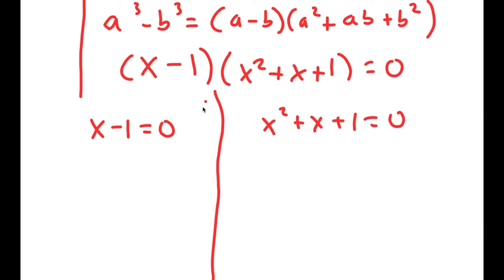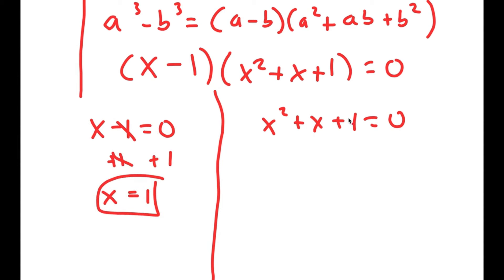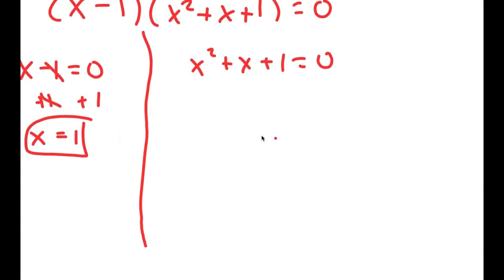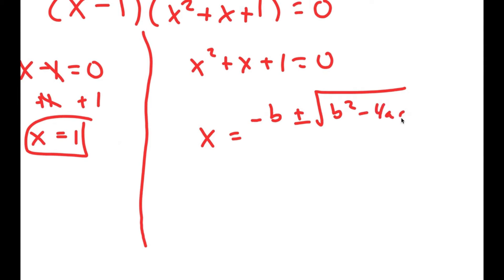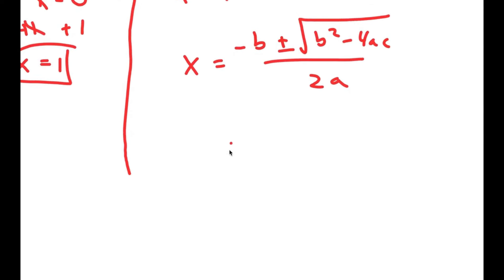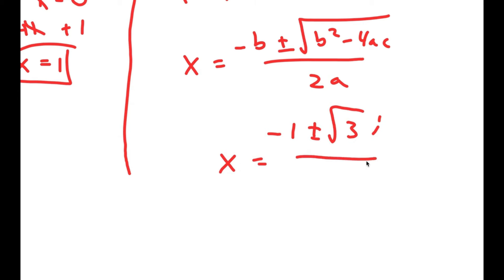So now I have x minus 1 equals 0 and x squared plus x plus 1 equals 0. For x minus 1 equals 0, I add 1 on both sides and get x equals 1. For x squared plus x plus 1 equals 0, I can use the quadratic formula. Using it, I get x equals negative 1 plus or minus the square root of 3 times i, over 2.